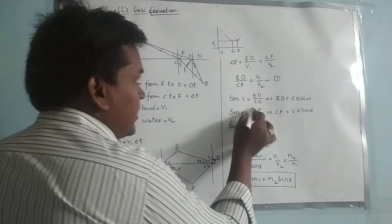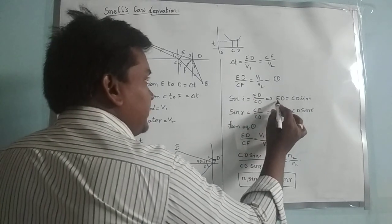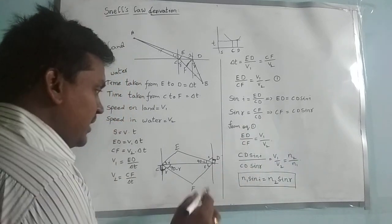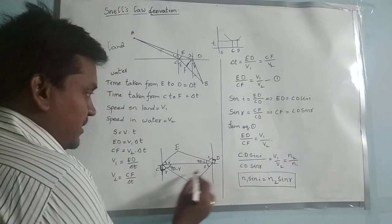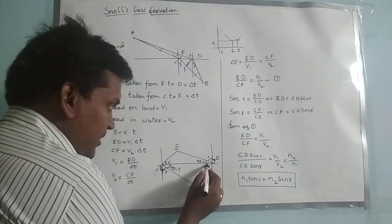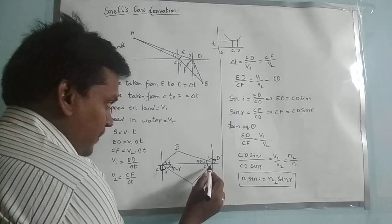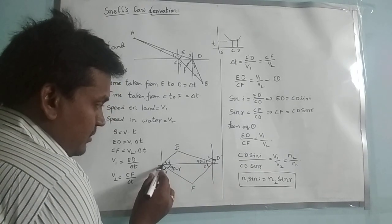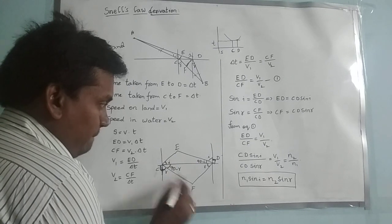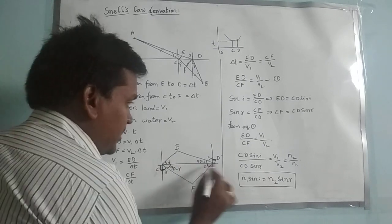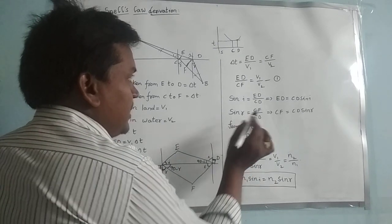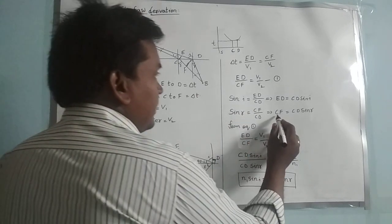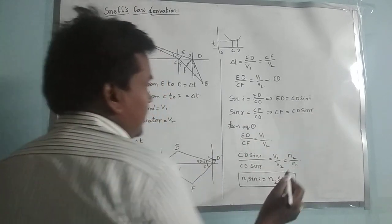So sine I equals ED by CD, which gives us ED equals CD sine I. In the same way, taking sine R — the opposite to the angle of refraction R is CF, and the hypotenuse is CD. So sine R equals CF by CD, which gives us CF equals CD sine R.